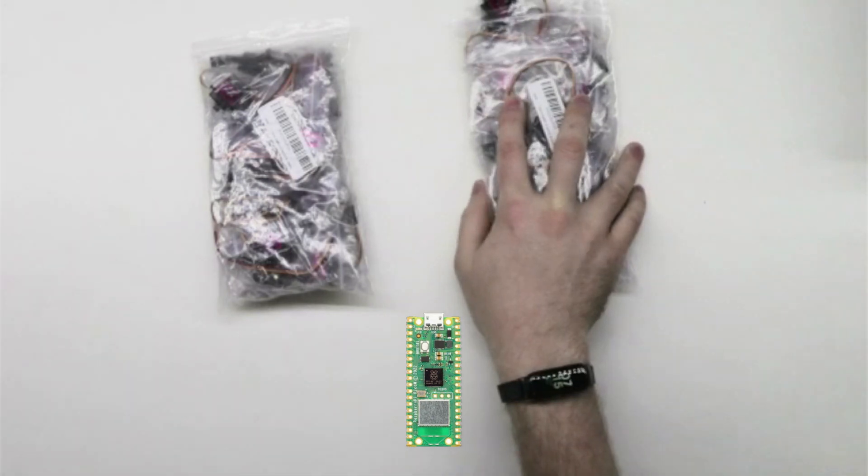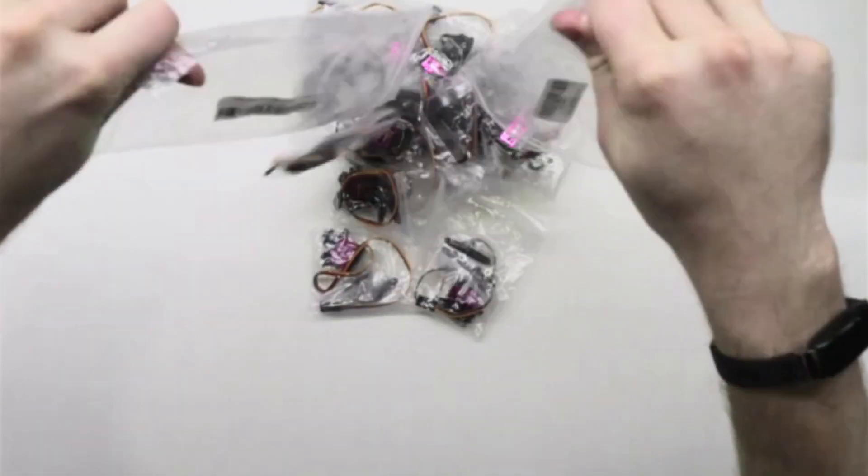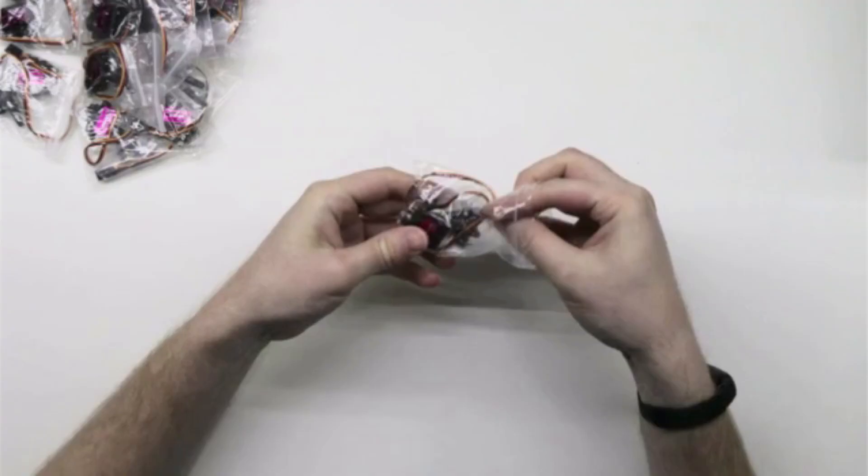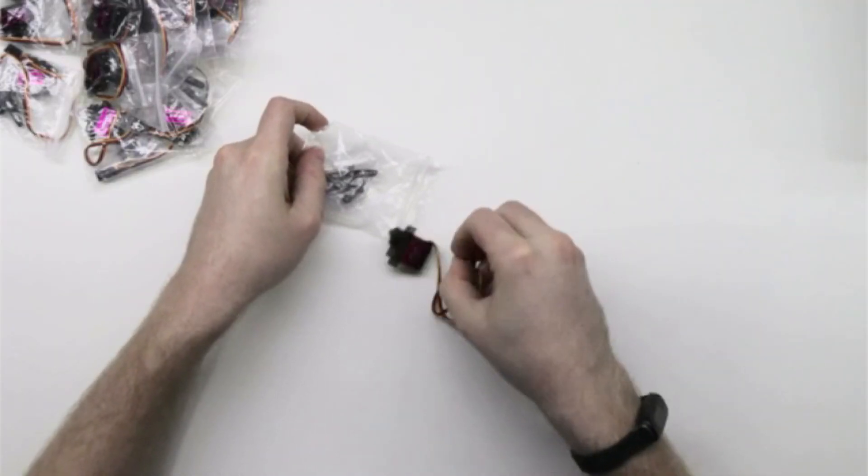I've already acquired a Raspberry Pi Pico W and 18 MG90S servos that I'll be using for this project. First, I need to unpack the 18 servos. I remove the servo and set aside the little bag of accessories for later.